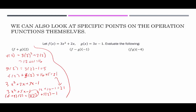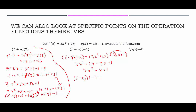Now we look at the difference function at x = −1. Combining f − g first: (3x² + 2x) − (3x − 1). Distributing the subtraction carefully gives 3x² + 2x − 3x + 1 = 3x² − x + 1. Plugging in −1: 3(−1)² − (−1) + 1 = 3 + 1 + 1 = 5.